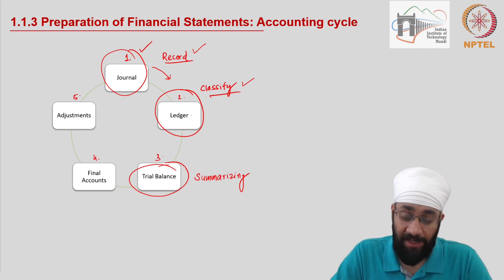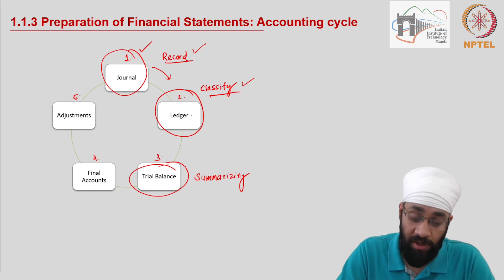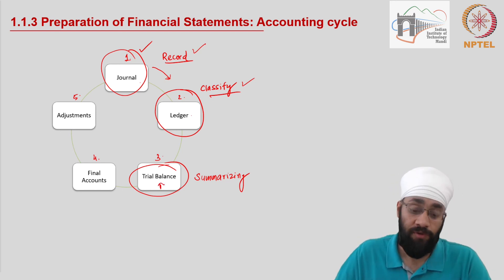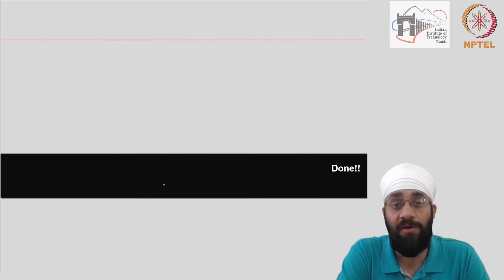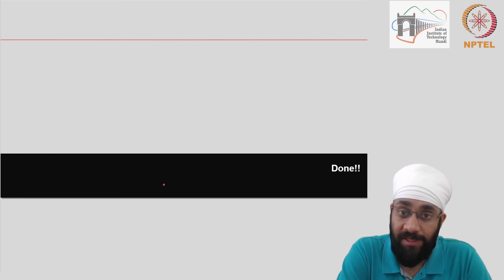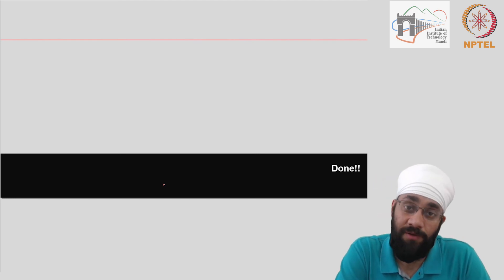This third step, the third statement and third book, is called a trial balance. In the following video I'm going to take you through the trial balance, the process of preparing it, and other details relating to this step in the accounting cycle. I'll see you in the next video.